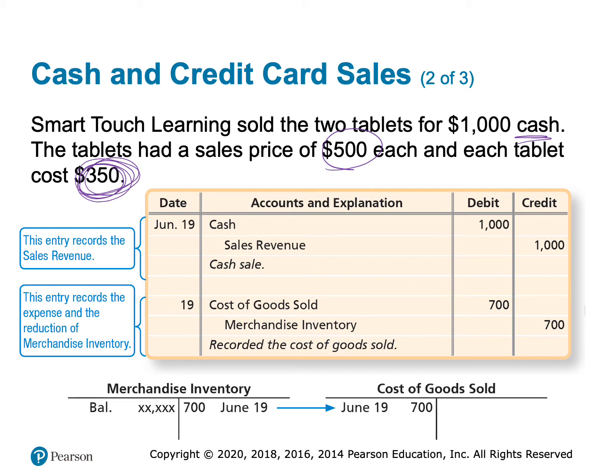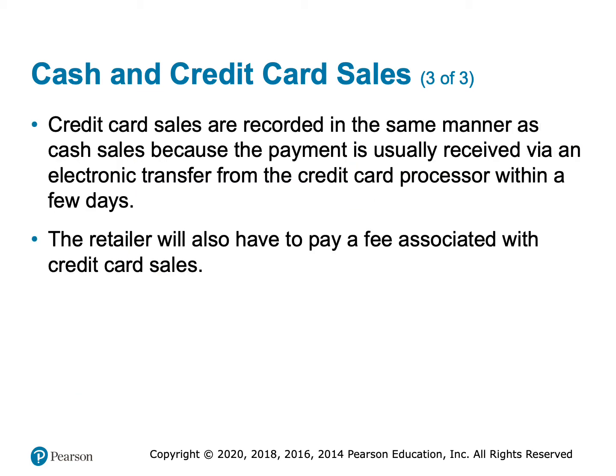Looking at our T-accounts, we've reduced our inventory account and increased our cost of goods sold expense account. If we accept a credit card, we're going to still call that a cash sale, because we are so confident we're going to get our money from Visa or MasterCard very quickly. If you're a large merchandiser, Visa and MasterCard process those several times a day; if you're a small company, it's the next day at most.